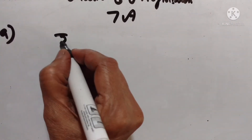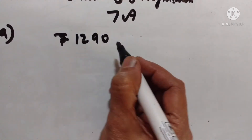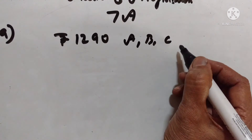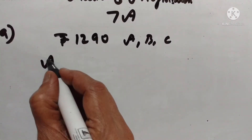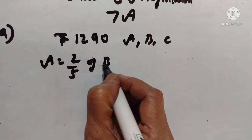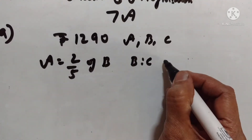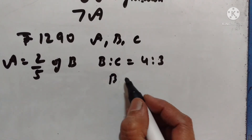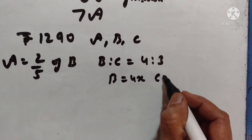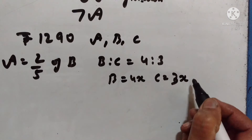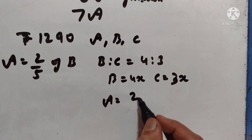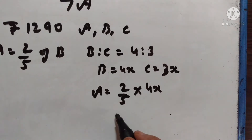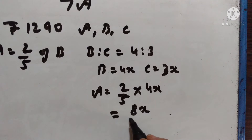Divide rupees 1290 into A, B and C such that A is 2 upon 5 of B and B is to C is equal to 4 is to 3. Let B get 4x and C get 3x. So A gets 2 upon 5 of B, which is equal to 8x upon 5.